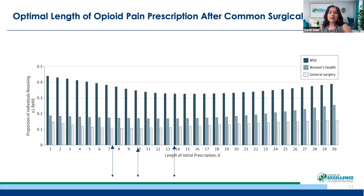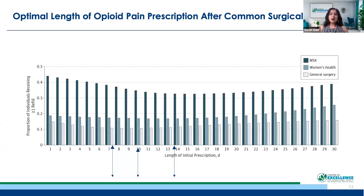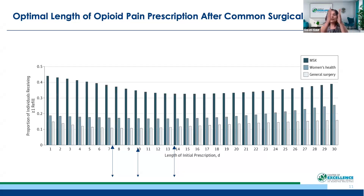On the x-axis is how many days the surgeons wrote the prescription for. On the y-axis is how many people then requested refills of their opioid pain medication. If you do it for too short a time, they request refills. If you do it for too long, there is also an increase in refills. The study found an elegant dip in the middle — the lowest point of that dip is the ideal amount of time to write a pain prescription.